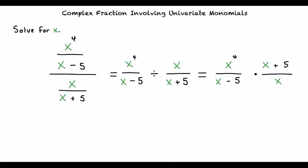From here, we can begin cancelling common factors. The only common factor that we can cancel is x. x to the 4th is the same as x times x times x times x. So x to the 4th divided by x results in only 3 x's, or in other words, x cubed.